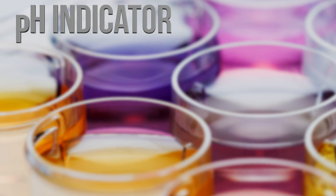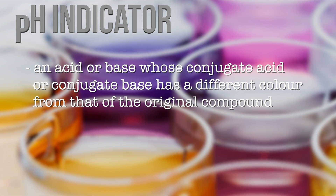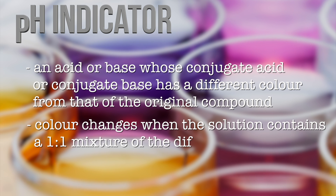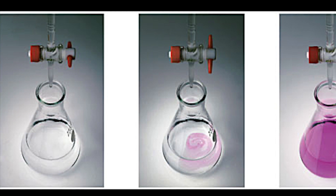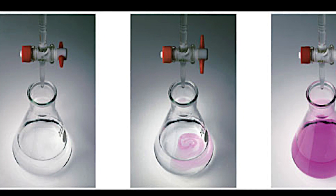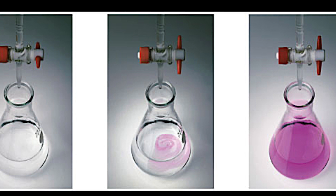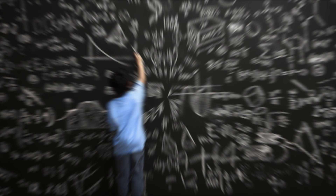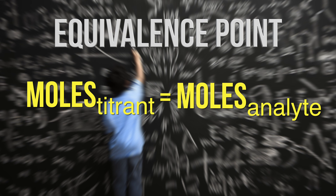A pH indicator is an acid or base whose conjugate acid or conjugate base has a different color from that of the original compound. The color changes when the solution contains a one-to-one mixture of the differently colored forms of the indicator. During titration, a pH indicator changes color when the necessary amount of titrant has been added to the analyte. This is called an endpoint, at which point we stop adding the titrant.